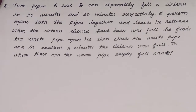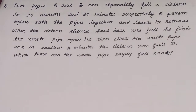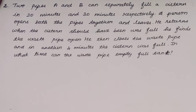When the timing is correct, the tank should be full — but the waste pipe was open, which is an outlet pipe, so water was being emptied. That is why the waste pipe is closed when the person returns. After closing it, 4 more minutes are needed to fill the system. So now how do we find the time for the waste pipe?